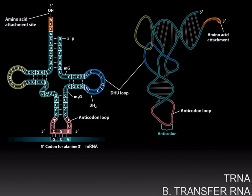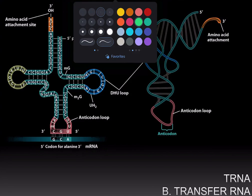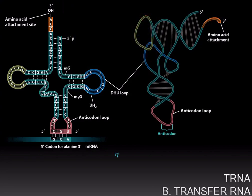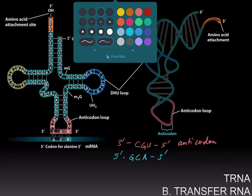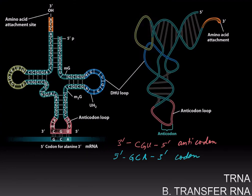These three base pairs are known as the anticodon. And we always write the codon five-prime to three-prime. So in this case, the codon is GCA. But the anticodon is always written three-prime to five-prime. So the anticodon for this tRNA is CGU. And so this is the anticodon, whereas in blue, we have the codon.